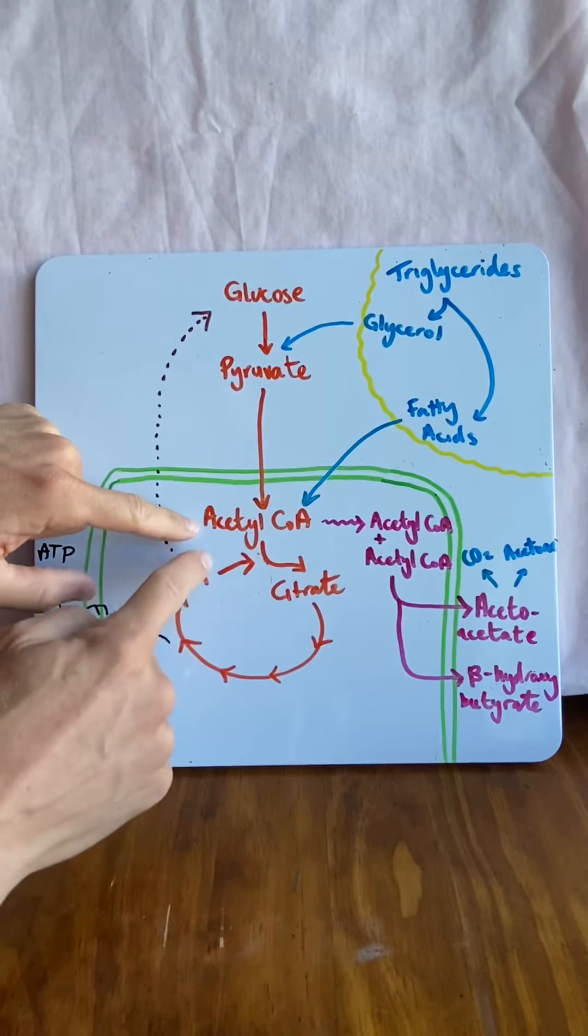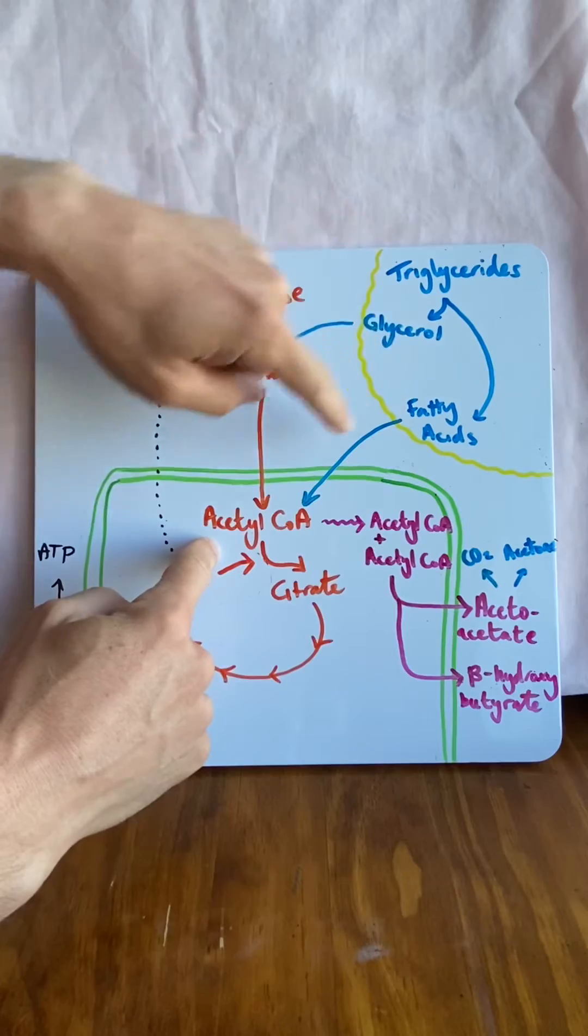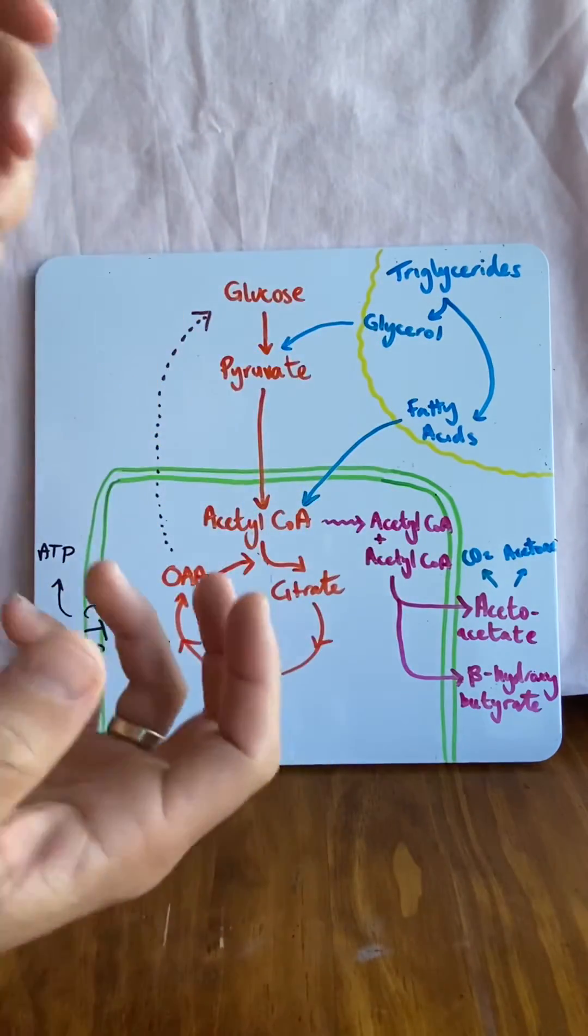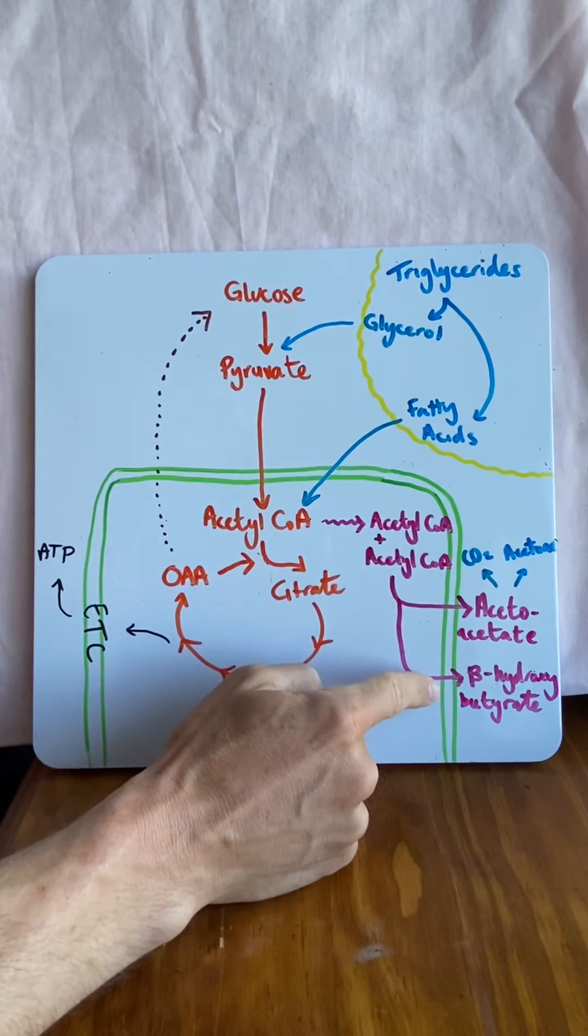So what happens is we start to accumulate a whole bunch of acetyl-CoA because of all these fatty acids that we have. If we have a bunch of acetyl-CoA, they snap together to form ketone bodies. Ketone bodies are acetoacetate and beta-hydroxybutyrate.